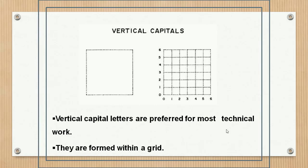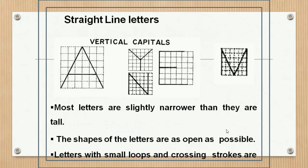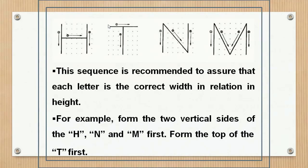The vertical capital letters are preferred for most technical work. Most of the letters are slightly narrower than they are tall. The shapes of the letters are as open as possible. This sequence is recommended to ensure that each letter is the correct width in relation to height — for example, form the two vertical sides of H and M, and from the top of T first. The H and N are slightly narrower than they are tall, while T and M are just as wide as they are tall.